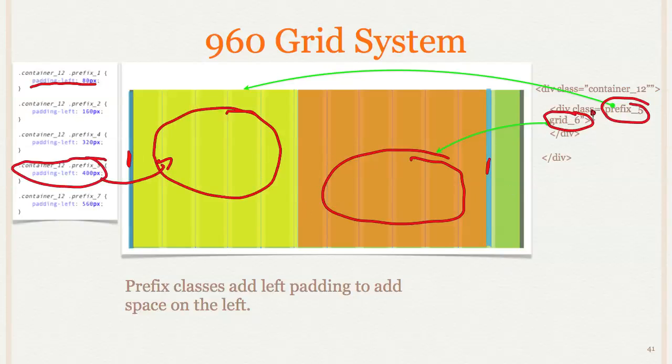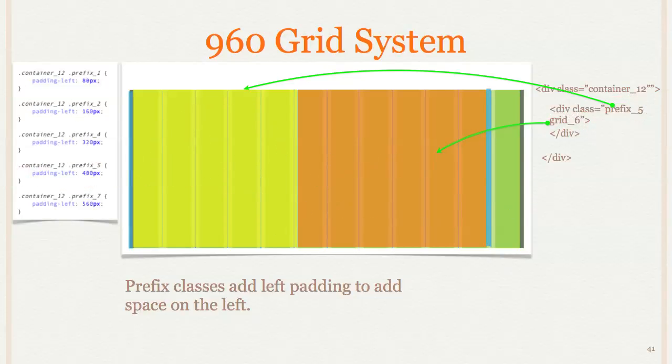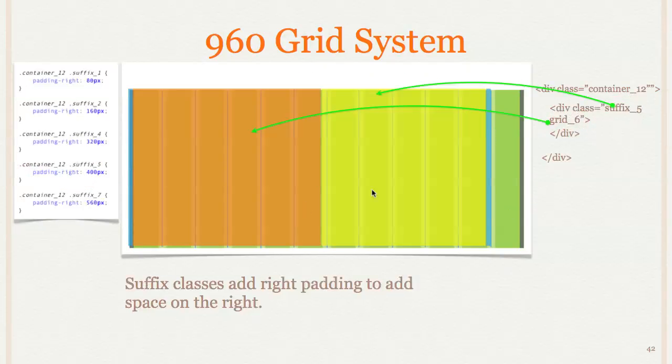By the way, it still means that any background color I give to this div will show here because it's just padding, remembering back to the box model. And then suffix does the same thing except on the right, so it adds padding to the right with suffix.